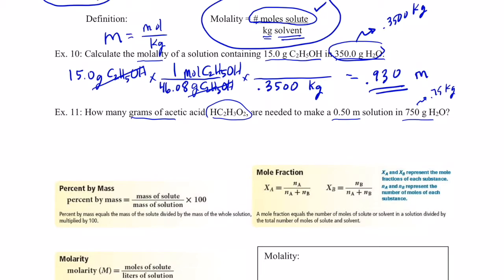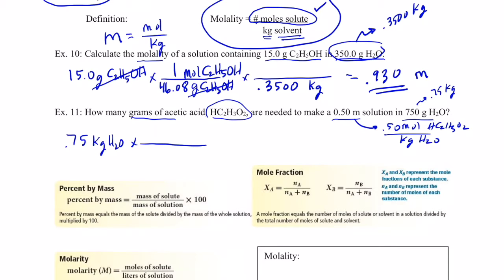We'll start with 0.75 kilograms of solvent and use molality as a conversion factor. My molality is 0.50 moles of acetic acid HC₂H₃O₂ per kilogram of solvent. I put kilograms of water on the bottom and moles of acetic acid on top — 0.50 moles per kilogram of water — so kilograms of water cancel and I have moles of acetic acid.